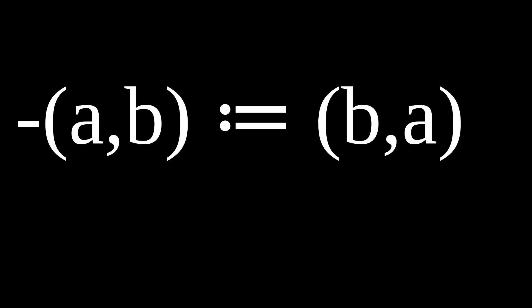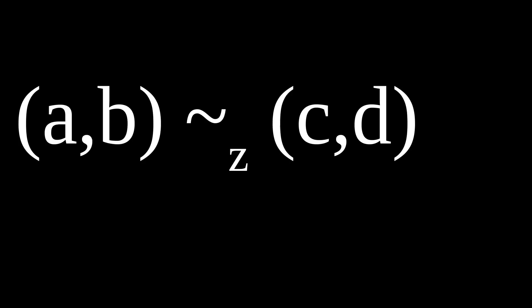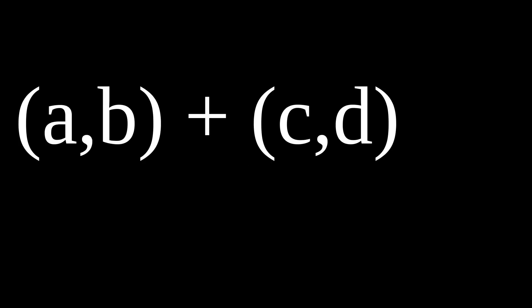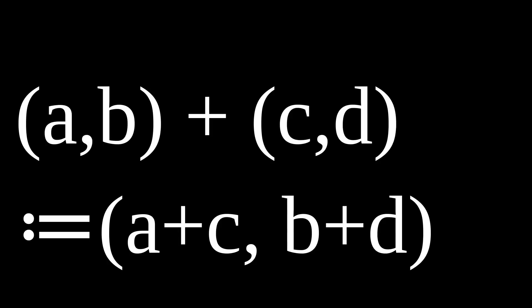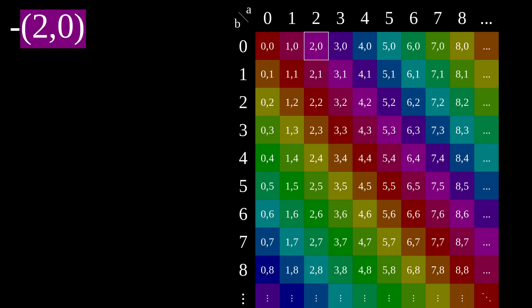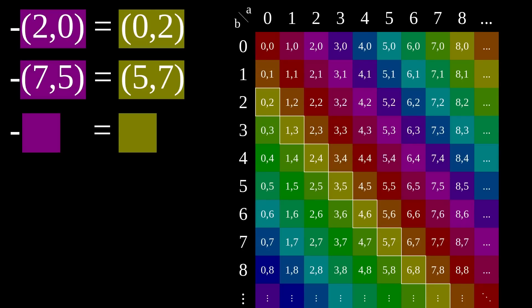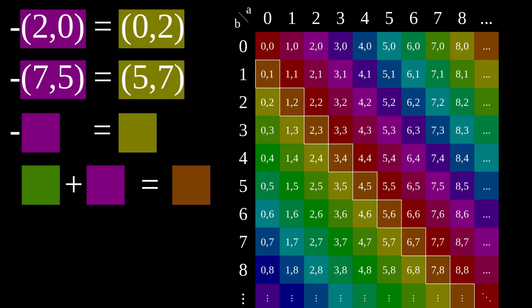For a pair a,b, we can define its negative as just the pair b,a, and it's easy to check that if a,b is equivalent to c,d, then so are their negatives. We can also define the sum of two pairs as a plus c, b plus d. Back on our grid, the negative of 2,0 is 0,2, the negative of 7,5 is 5,7, and the negative of anything on this violet diagonal will lie on this yellow diagonal. You can also check that anything on this green diagonal plus anything on this violet diagonal will lie on this orange diagonal.